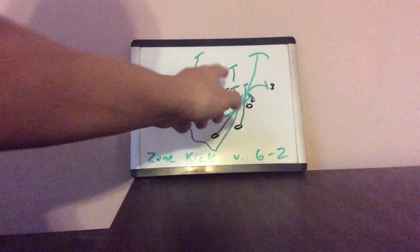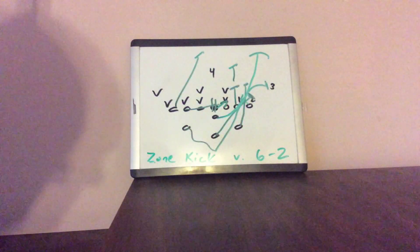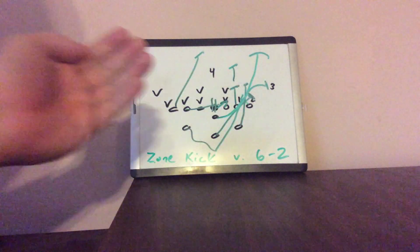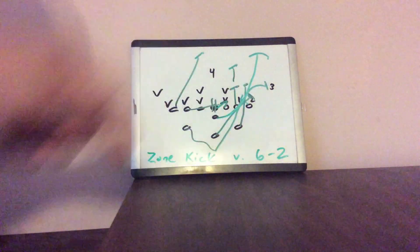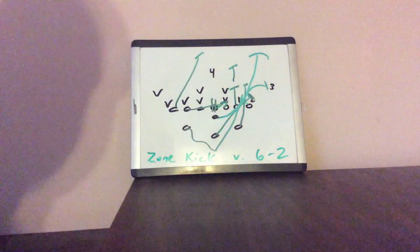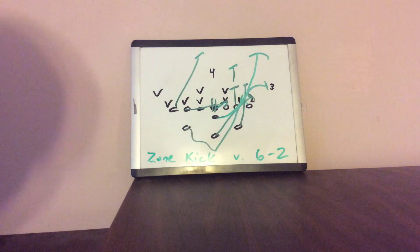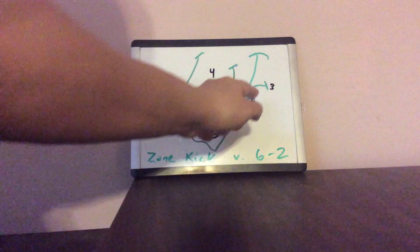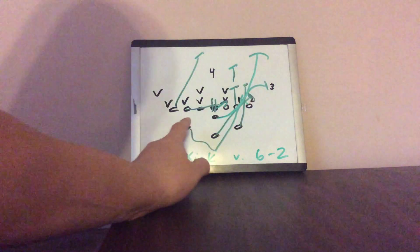four. But if the mike comes over the top of the tackle, which is very likely on zone option because of the way the quarterback opens, he's going to end up blocking the mike and the tackle is going to end up blocking number four, which is the free safety. The B-back kicks number two. The back's A-back